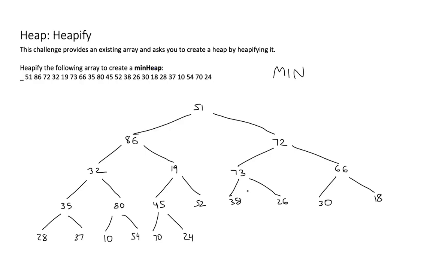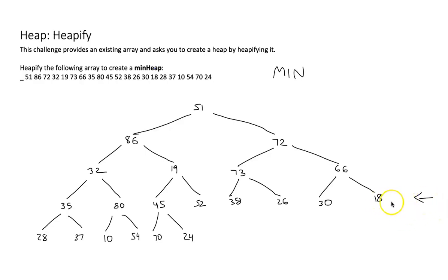The way heapifying works — and that is important — is we start at the bottom. The very last row is all leaves. You can think of that as subtrees that only have a root, so if there's only a root, that's a perfect heap, nothing to do there. So we start in this row, and I recommend writing arrows on the right-hand side to help you keep track of the level you're working on. That can be helpful on exams.